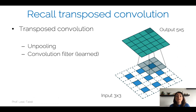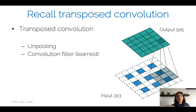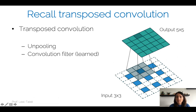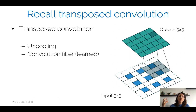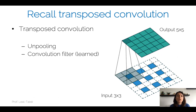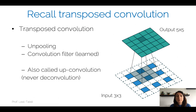Recall the notion of transposed convolution. To go from an input of 3×3 (blue samples) to an output of 5×5, you first perform unpooling of the input — spreading the samples of the 3×3 input — and then slide a convolutional filter on top of this spread-out unpooled input to produce the 5×5 output. This entire operation — unpooling plus convolutional filter — learned with backpropagation, is called the transposed convolution. It can also be called up-convolution, but never deconvolution.